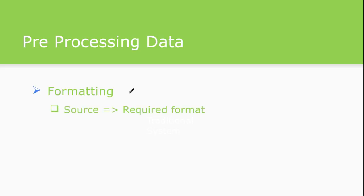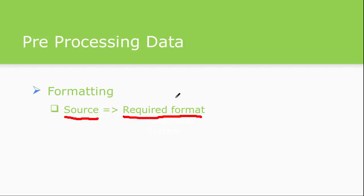Once we have selected data, let's look at the preprocessing required. First is formatting — data available from different sources will be in very different formats. The source format is always different and the required format may differ, so you need to transform the gathered data into a form you can feed into machine learning algorithms. For example, if data is on a web page, you need feature engineering to convert it into a feature vector. Similarly, data from SQL or MongoDB needs to be converted to the required format for ML algorithms.